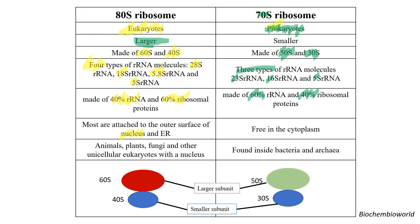The next question is where they are localized. The 80S ribosomes are usually attached to the outer surface of the nucleus and endoplasmic reticulum, though some are also found free in the cytoplasm. In the case of the 70S, prokaryotes do not have a membrane-bound nucleus or endoplasmic reticulum, so the 70S ribosomes are found free in the cytoplasm, not attached to the nucleoid.